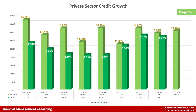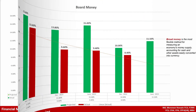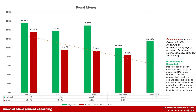The private sector credit growth projected for June 2023 is 14.10 percent. In December 2022, the projection was 13.7 percent but the actual was 12.8 percent. The broad money projected for June 2023 is 11.5 percent; in December 2022 it was projected at 10 percent, and the actual was 8.4 percent.